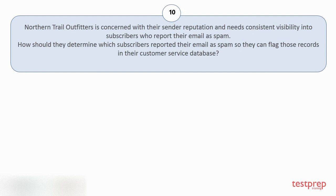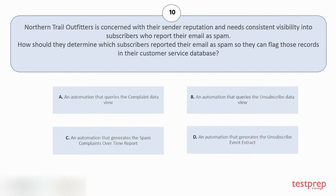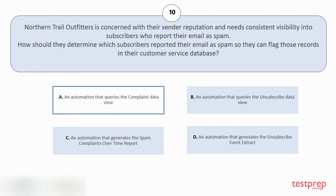Question number ten: Northern Trail Outfitters is concerned with their sender reputation and needs consistent visibility into subscribers who report their email as spam. How should they determine which subscribers reported their email as spam so they can flag those records in their customer service database? Options: A) An automation that queries the complaint data view. B) An automation that queries the unsubscribe data view. C) An automation that generates the spam complaints over time report. D) An automation that generates the unsubscribe event extract. The correct answer is option A.